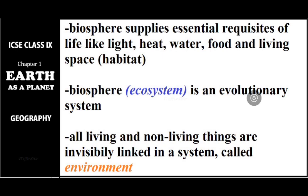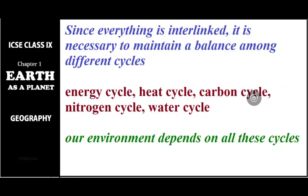All living and non-living things are invisibly interlinked in a system called the environment. Since everything is interlinked, it is necessary to maintain a balance among all the different cycles. There are mainly five cycles that help in the existence of life: the energy cycle, heat cycle, carbon cycle, nitrogen cycle, and water cycle. If these cycles don't work properly, life will be difficult to sustain on earth.